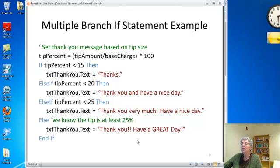Here's an example of a multiple branch if statement. I want to make a thank you message based on the percent tip that I'm getting. I'll figure out my tip percent: the tip amount divided by the base charge times 100. If the tip percent is less than 15, I'll say thanks. Else if the tip percent is less than 20, now if I got past the first statement, I know the tipping percent is at least 15. So it's at least 15 but less than 20, so I'll say thank you and have a nice day.